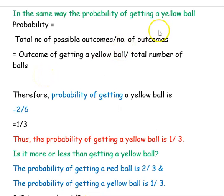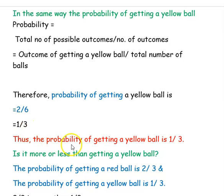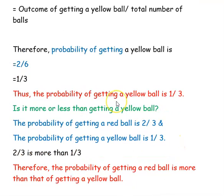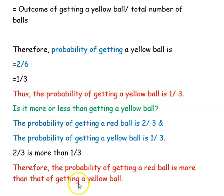The same way we can find the probability of getting a yellow ball. The probability of getting a yellow ball is equal to number of yellow balls divided by total number of balls. You have 2 yellow balls and 6 total balls, so the probability is 2 divided by 6, which is 1 divided by 3. Now, is the probability of getting a red ball more or less than getting a yellow ball? We found that probability of red ball is 2/3 and probability of yellow ball is 1/3. Since 2/3 is more than 1/3, the probability of getting a red ball is more than that of getting a yellow ball.